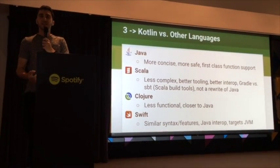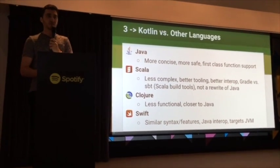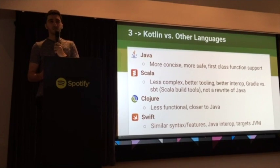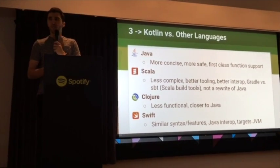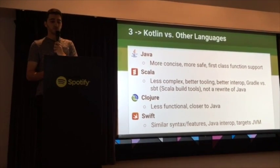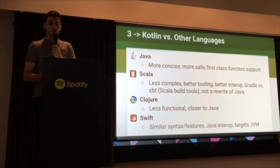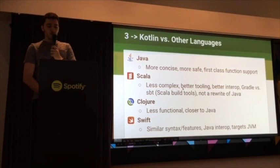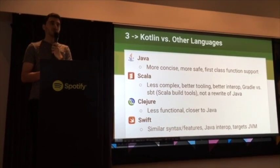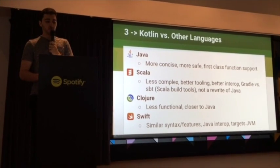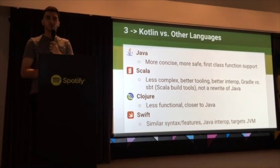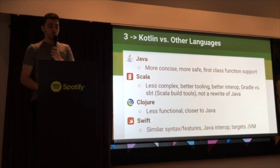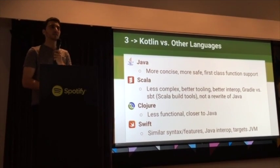For the comparison to other languages: Kotlin is definitely a lot less complex and less feature-rich than Scala, and because of that JetBrains is able to provide a really high level of tooling and support. The interop between Java and Kotlin also works really well versus Scala, which has some problems. Clojure is on here to represent functional languages on the JVM. Swift is included because there have been rumors that Google is looking at Swift for Android, but they'd have to do a lot of work to make that possible — whereas Kotlin targets the JVM, so it's possible today.